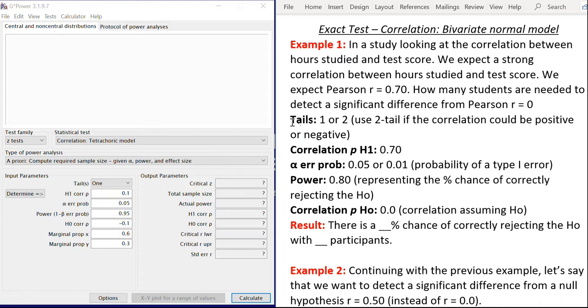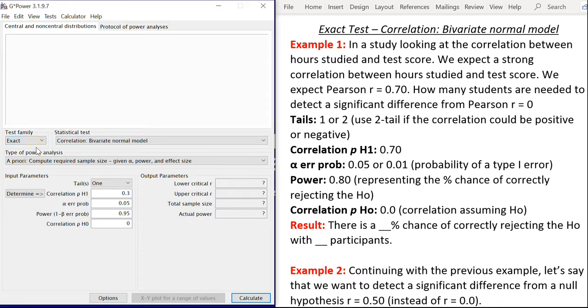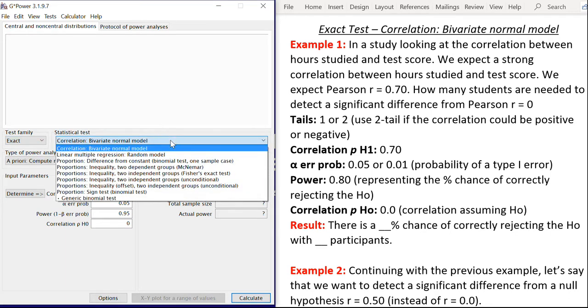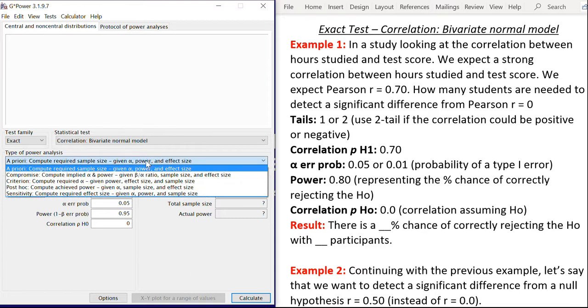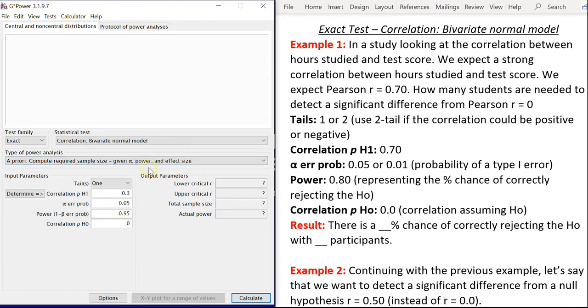So the first thing that we want to do is go over here to G*Power and select exact tests. And once we have selected exact tests, we want to make sure that correlation bivariate normal model is selected. The next step here is to select the type of power analysis and we're going to do this with an a priori power calculation.